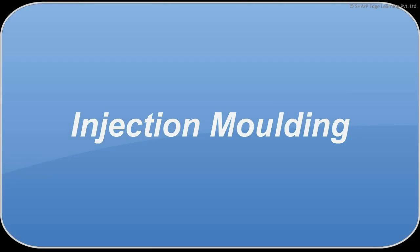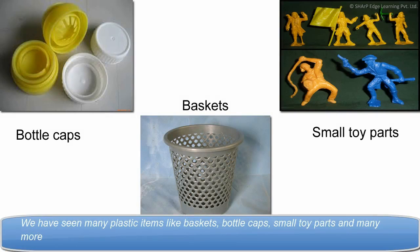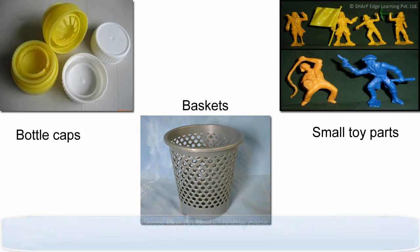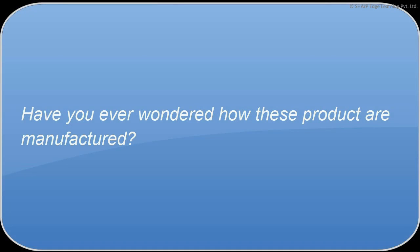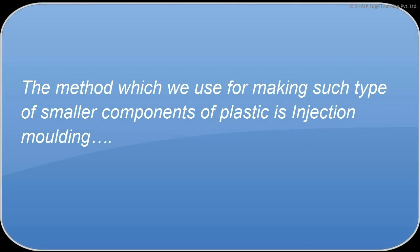Injection molding. We have seen many plastic items like baskets, bottle caps, small toy parts and many more. Have you ever wondered how these products are manufactured? The method which we use for making such type of smaller components of plastic is injection molding.